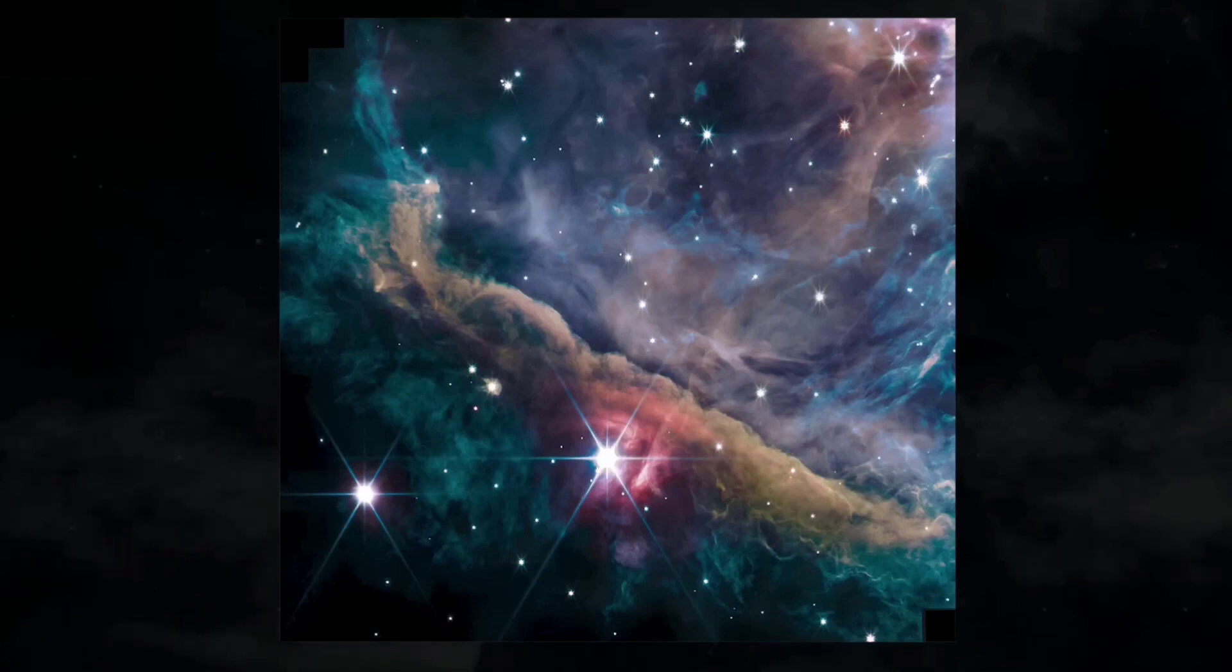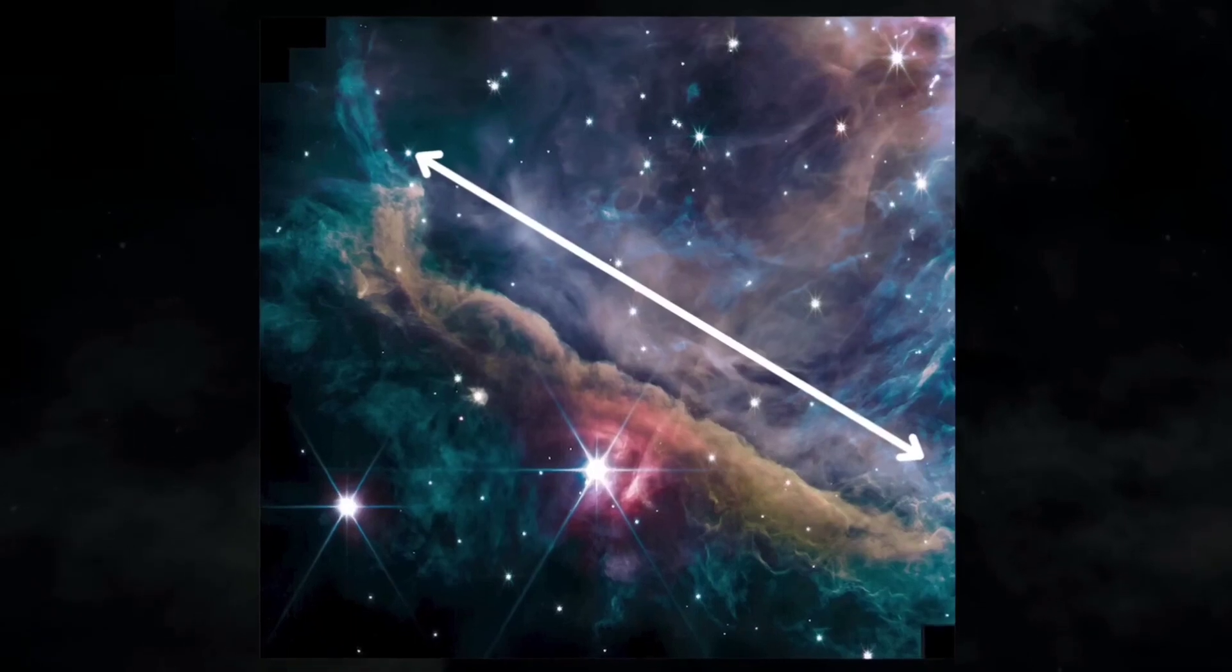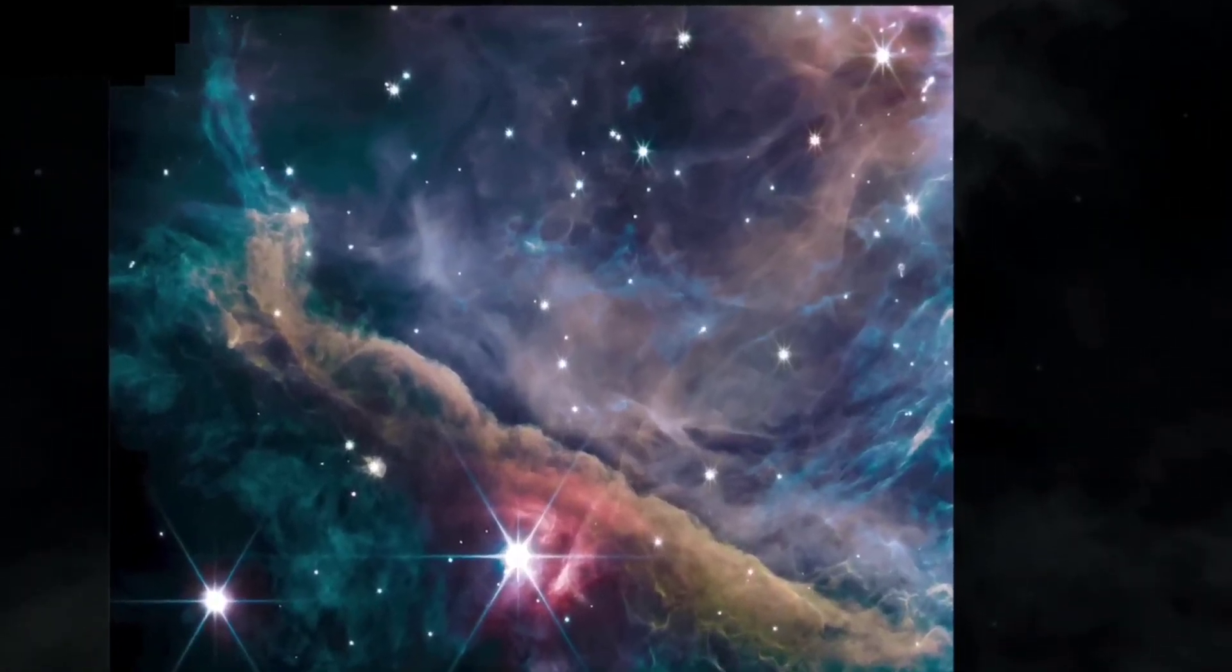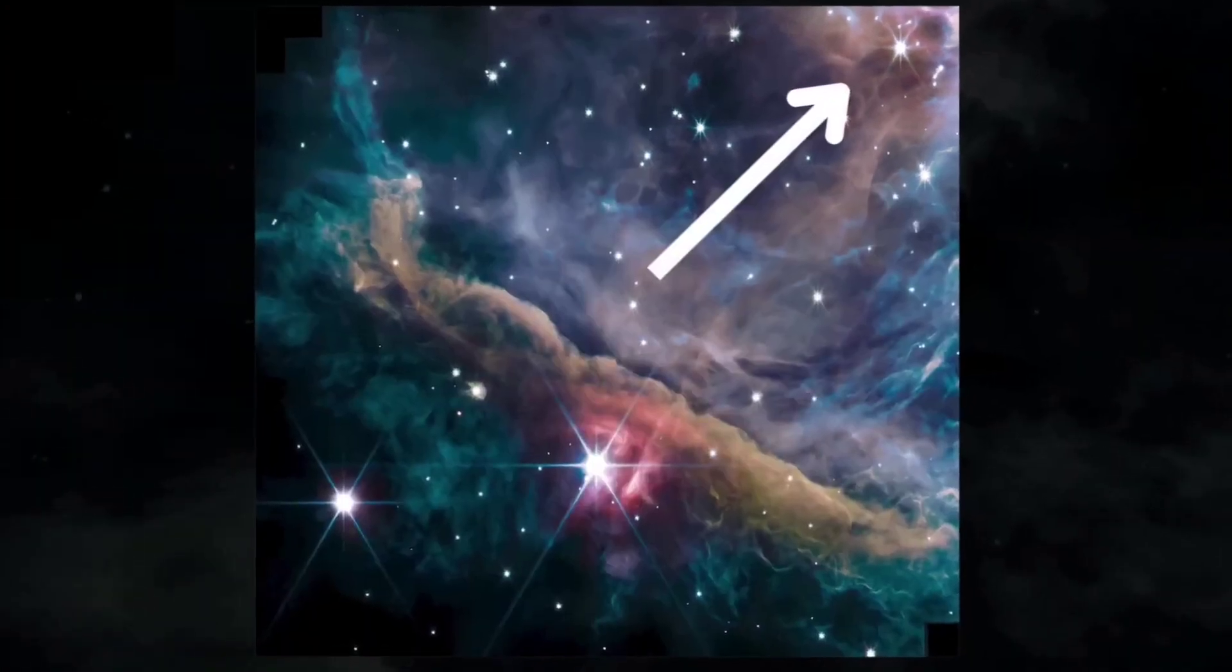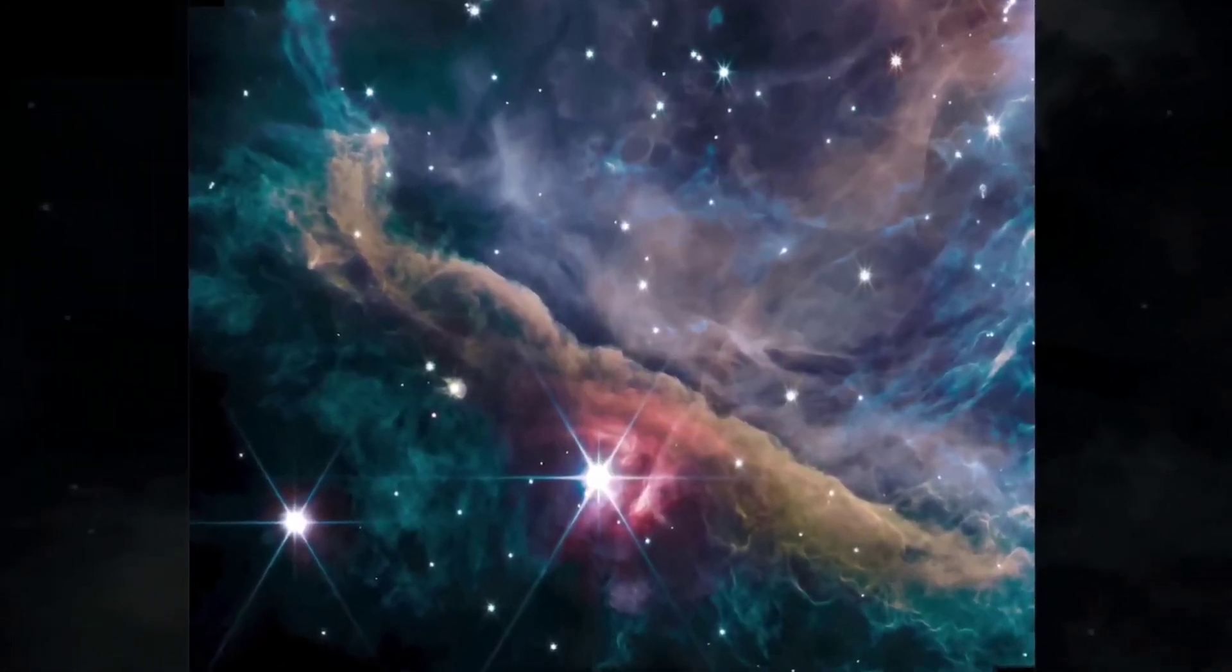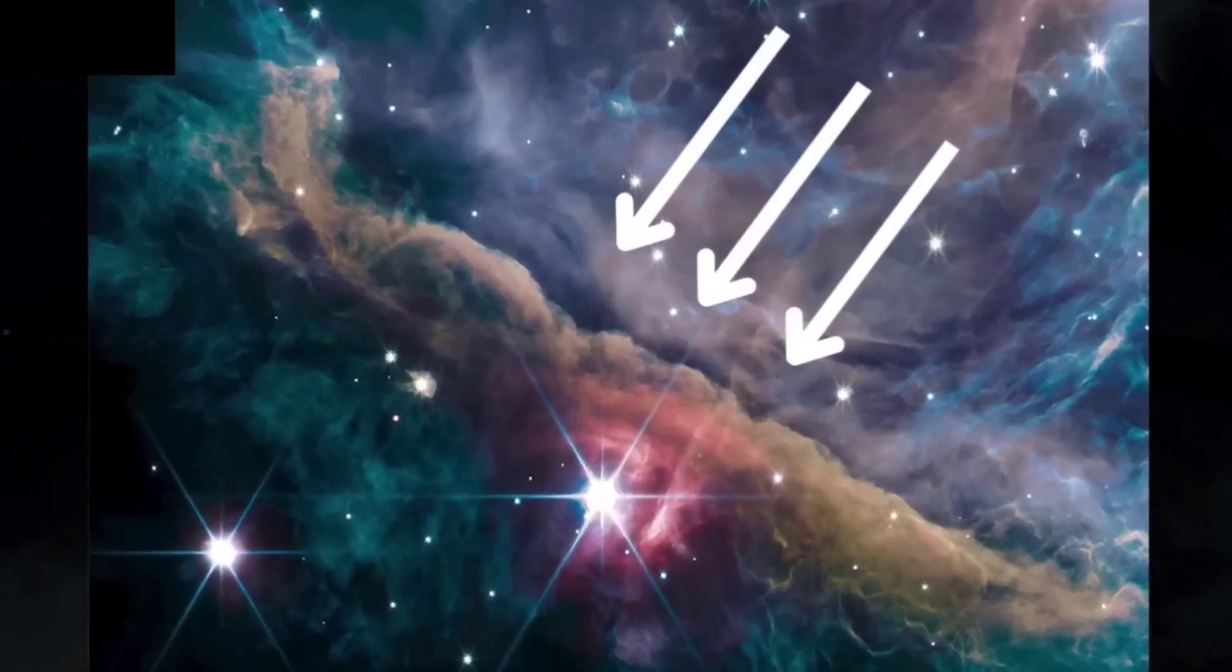The new image focuses on a structure called the Orion bar, running diagonally from the top left to the bottom right. Light from a cluster of young, hot stars, called the trapezium cluster, illuminates the scene from the top right corner. This harsh, ionizing ultraviolet light is slowly eroding the bar away.